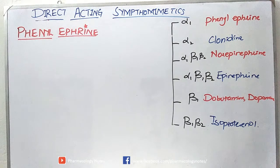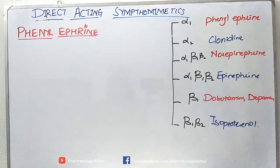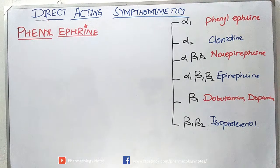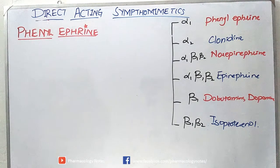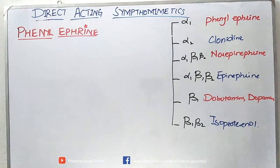We have previously discussed the sympathomimetic drugs: norepinephrine, epinephrine, dobutamine, dopamine, and isoproterenol. The remaining ones are clonidine and belindafrine, and today we will discuss phenylephrine and clonidine.